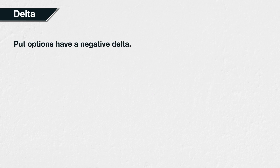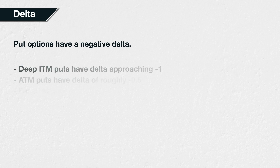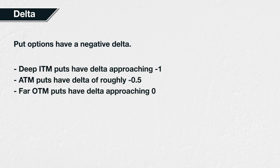Put options have negative delta, because all other things being equal, an increase in the underlying price will make all put options less valuable. Put options have deltas between 0 and minus 1, with deep-in-the-money puts having delta approaching minus 1, at-the-money puts having delta of roughly minus 0.5, and far-out-of-the-money puts having delta approaching 0.